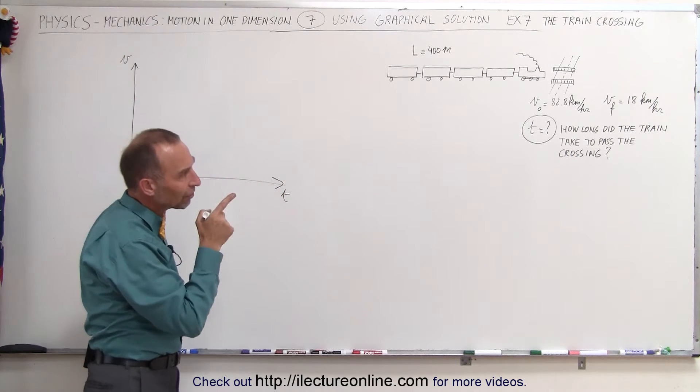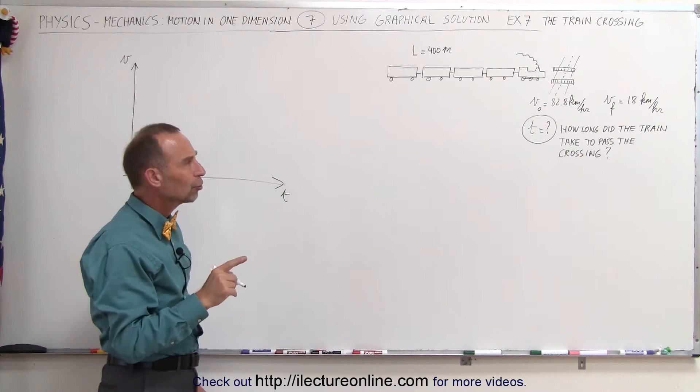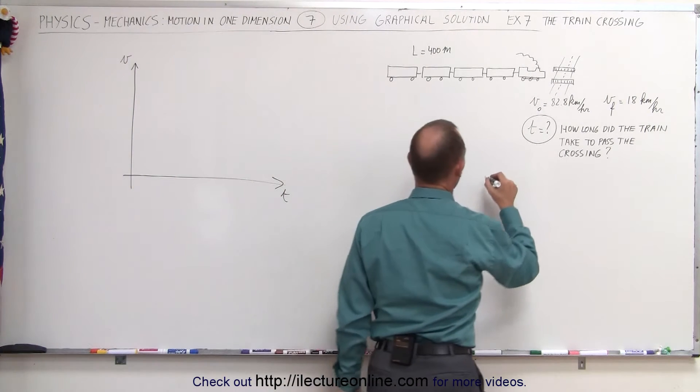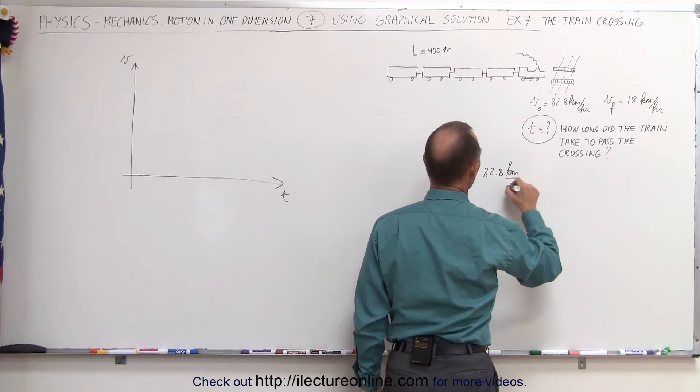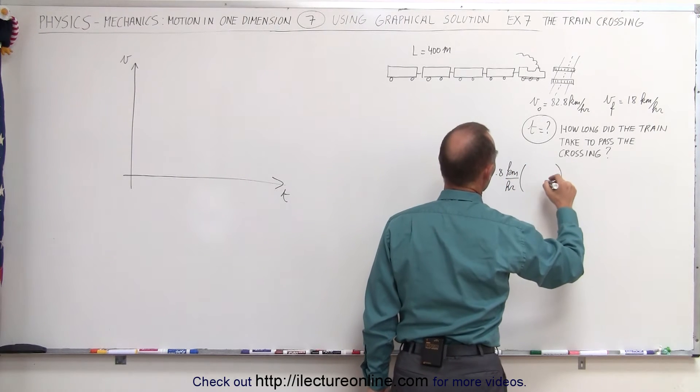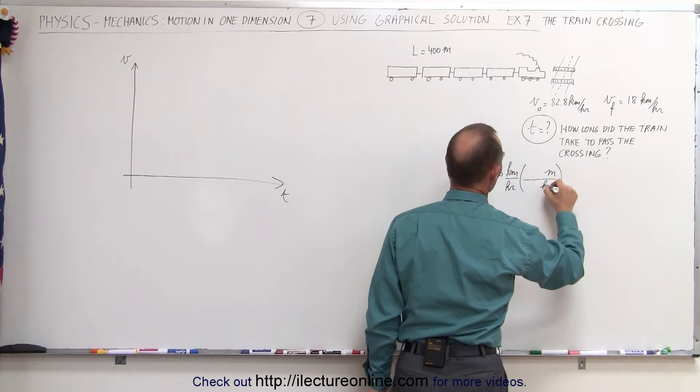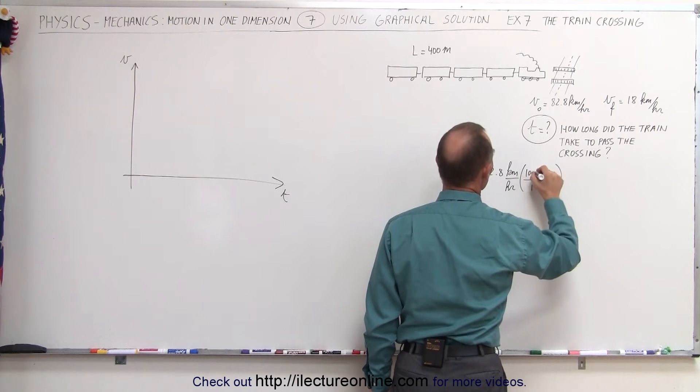Now notice that the velocity in terms of kilometers per hour, we probably want to convert that to meters per second. So 82.8 kilometers per hour, convert from kilometers to meters, so we want meters at the top, kilometers at the bottom, one kilometer is a thousand meters.